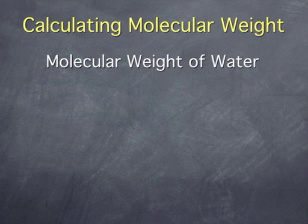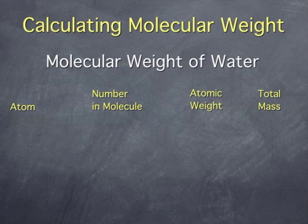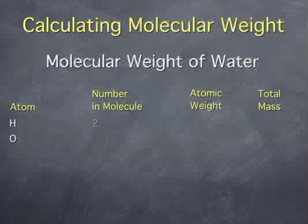We can do this by making a table. We list the atoms in the molecule down the left. Water contains hydrogen and oxygen. Then we write down the number of each of these atoms: two and one.